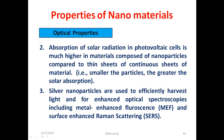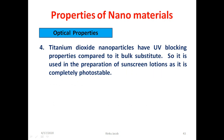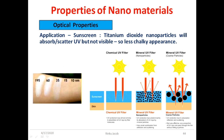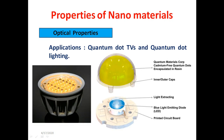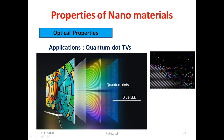Other optical properties: absorption of solar radiation in photovoltaic cells is much higher in nanoparticle materials compared to thin sheets of the same material — smaller the particles, greater the solar absorption. Silver nanoparticles are used to harvest light efficiently and for enhanced optical spectroscopies including metal-enhanced fluorescence (MEF) and surface-enhanced Raman scattering (SERS). Titanium dioxide nanoparticles have UV-blocking properties and are used in sunscreen lotions as they are completely photostable — absorbing or scattering UV rays without affecting visible light, leaving less chalky appearance on skin. Quantum dots can convert light energy into multiple colors, useful in quantum dot TVs and quantum dot lighting.